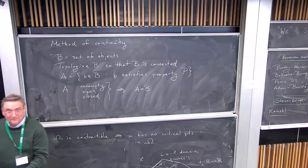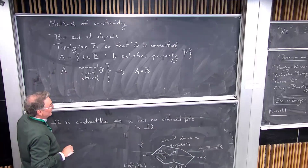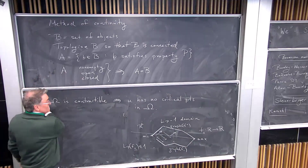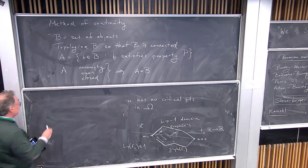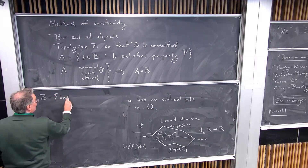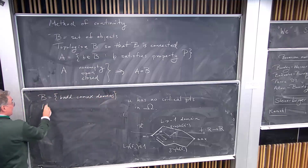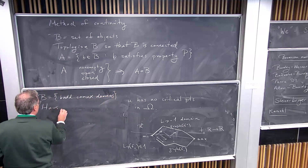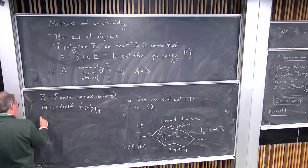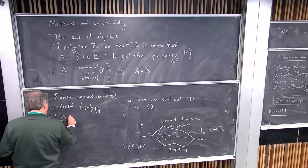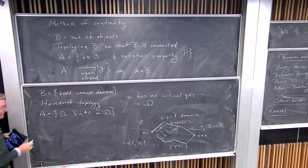For us, B is the set of bounded convex domains with the Hausdorff topology — which is already connected — and A is the set of domains Omega such that the second Neumann eigenfunction u has no critical points in Omega. The Hausdorff topology has been mentioned a couple of times at this conference.